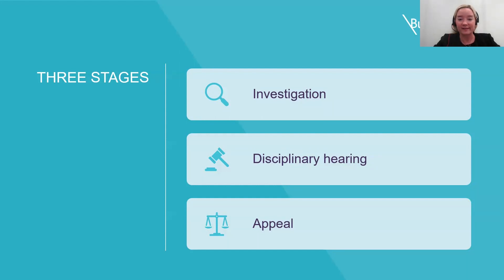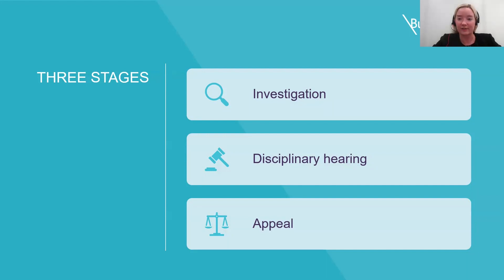The second stage in the process is the disciplinary hearing itself, and also the subsequent outcome. Once the investigation is complete, if the employer decides that formal disciplinary action is needed and there is a case to answer, it should write to the employee to confirm the outcome of the investigation and invite them to a disciplinary hearing. At the disciplinary hearing, the employee should be given a reasonable opportunity with the help of their companion to present their version of events and produce any evidence in support of their position. It is key that the employee is able to respond to the allegations against them and any evidence being relied upon by the employer.